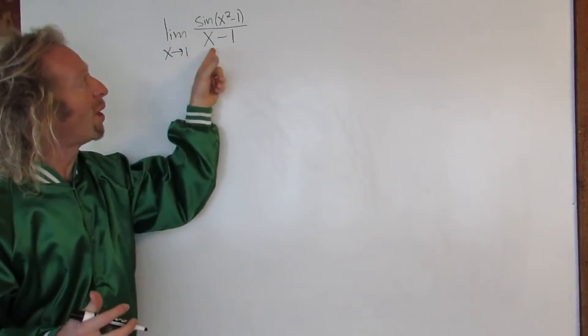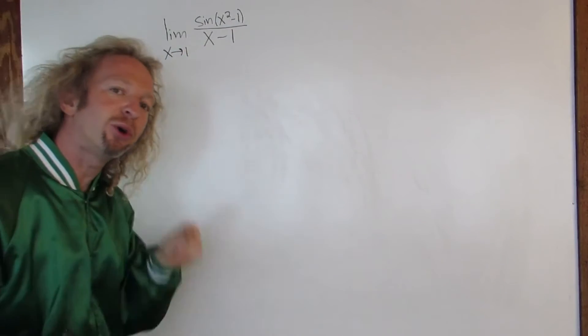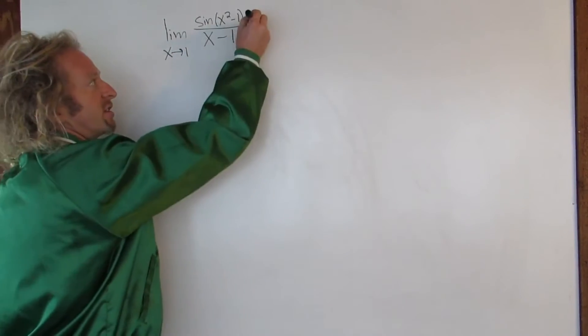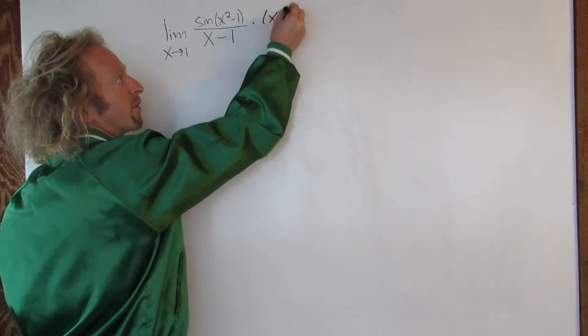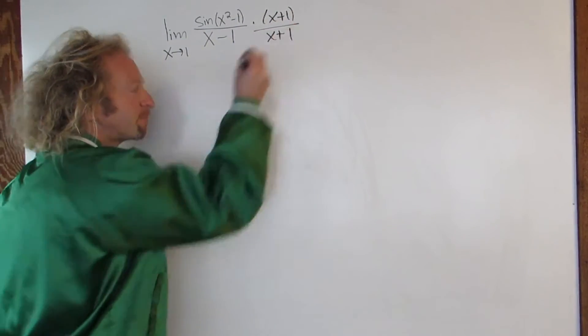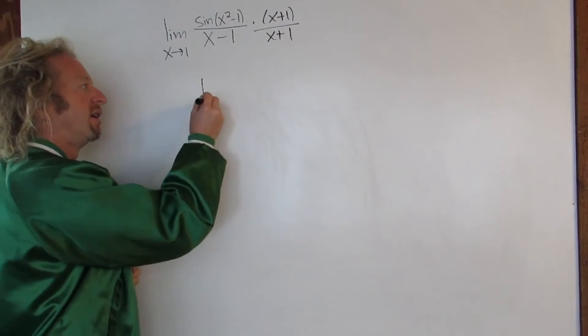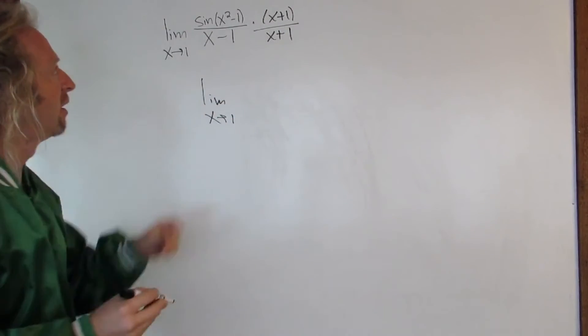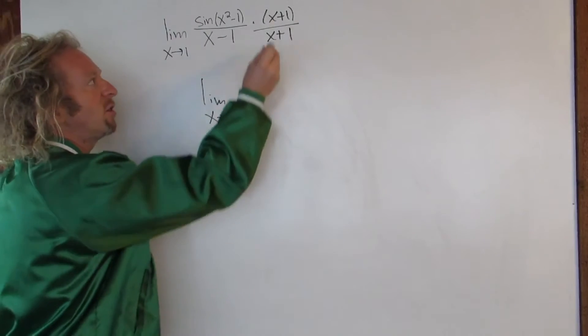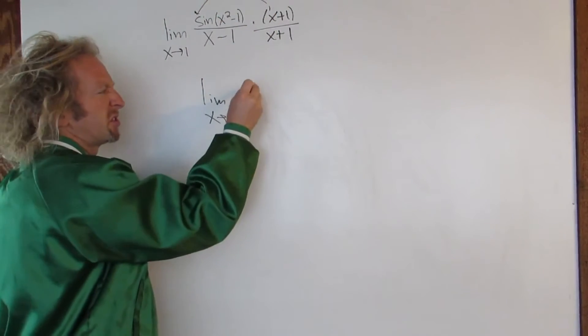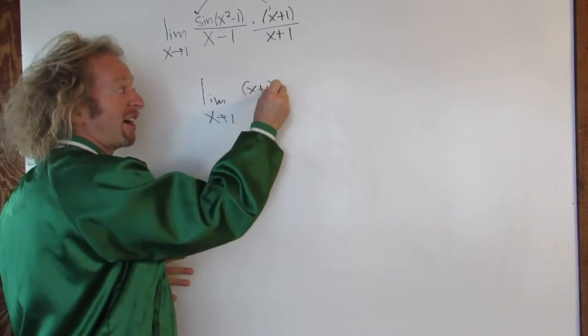So the way to do that would be to multiply by x plus 1 over x plus 1. So check this out. So this is x plus 1 over x plus 1. So now we get limit x approaches 1. The top is the same, so I'm going to put the x plus 1 in the front just because it looks better. You don't have to do that.